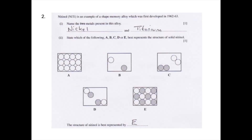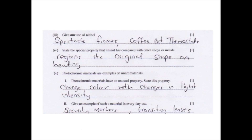Here are the answers to question two. The two metals present in nitinol are nickel and titanium. Diagram E best represents nitinol because nitinol is a solid mixture, representing particles in a solid with two different atoms present. One use of nitinol could be spectacle frames or coffee pot thermostats. The special property that nitinol has compared with other alloys or metals is its ability to regain its original shape on heating. Photochromic materials are able to change colour with changes in light intensity, and examples in everyday use would be security markers and transition lenses.